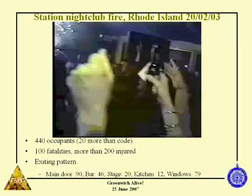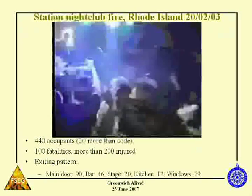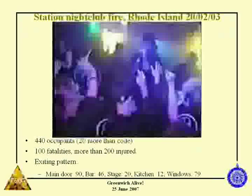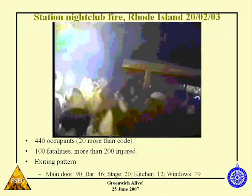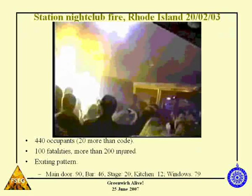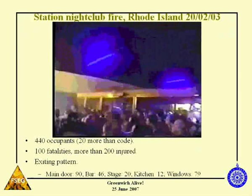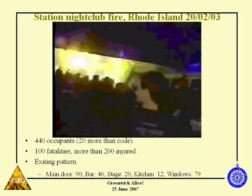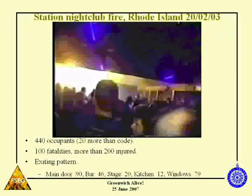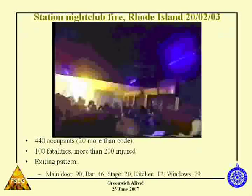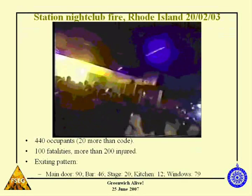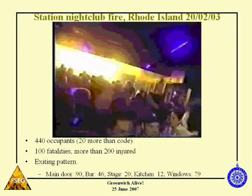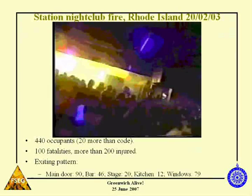I want to show you one last thing — it's the Rhode Island Disco. This is actually a video from the incident. I'm not going to play the sound because the sound is horrific. You can see people actually thought the pyrotechnics were part of the stage act, and that the wall catching fire was part of the act — so a lot of people aren't reacting. 100 people died in this fire, 200 people were seriously injured, with 440 people in the building in total.